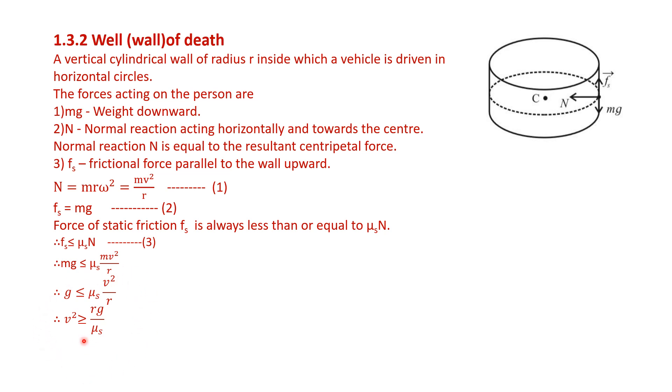So, V square ka value jo hai, wo Rg upon mu s se zyada hona chahiye. So, minimum value kitna? Equal to hona chahiye. This is the minimum value. So, V ka value will be the square root of this. So, V minimum is equal to square root of Rg upon mu s. So, for a vehicle to revolve on a vertical wall, the vehicle's minimum velocity should be this much.